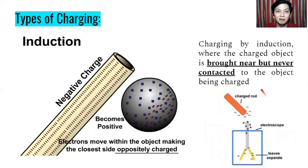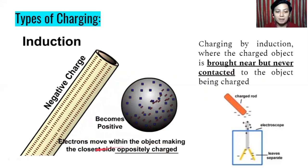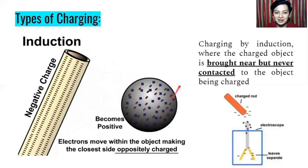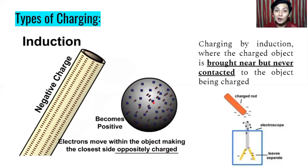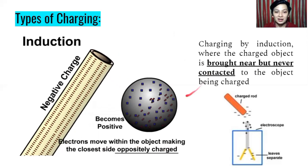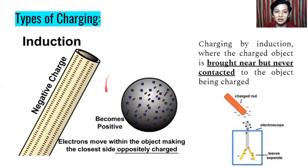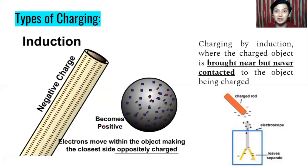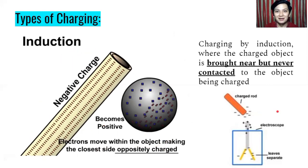And then we have the second type of charging, which is about charging by induction. So we have here a negatively charged object. And then we have here the positive sphere or metal sphere. So as you can see, electrons move within the object making the closest side oppositely charged. The other side becomes oppositely charged, but they are not in contact to each other. So meaning to say, charging by induction is where the charged object is brought near but never contacted to the object being charged. You can see it here that they are not contacted to each other. But the other one has a different charge, and that is by induction.